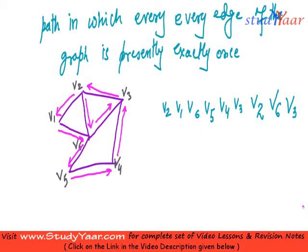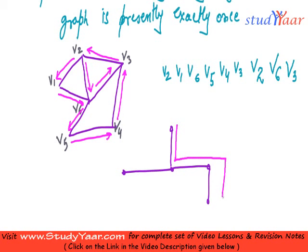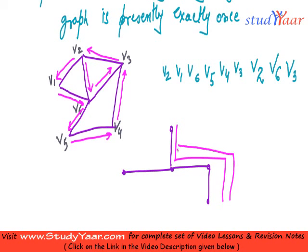Just remember, every graph would not have a Eulerian path. For example, if I take a graph like this, then this particular graph is not going to have a Eulerian path, because let us suppose I start from here, I go to here, then here, and then here. Now I have not covered this edge, and there is no way for me to cover this edge unless I go back to these edges. So this graph does not have a Eulerian path.